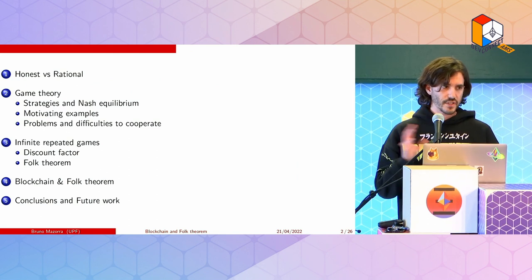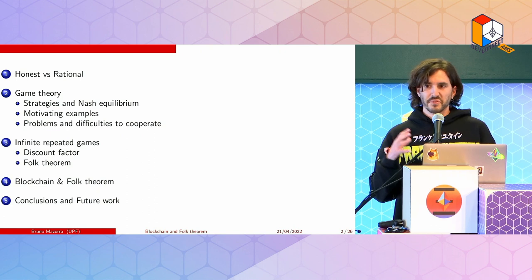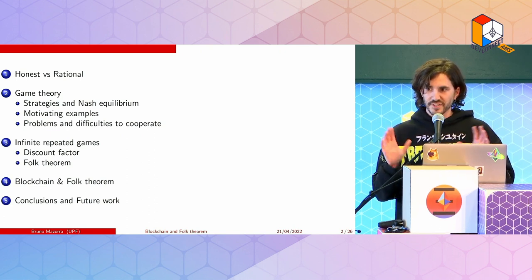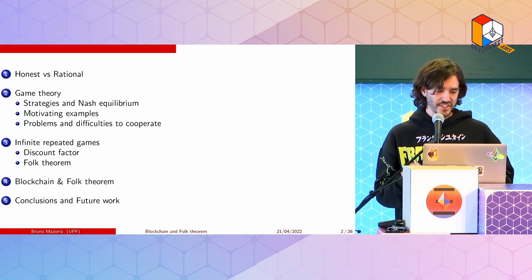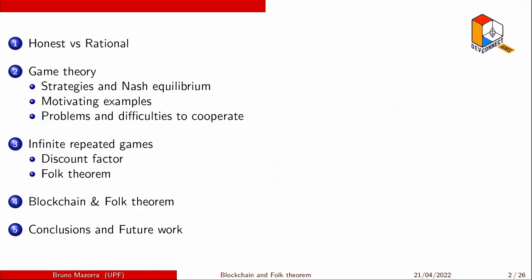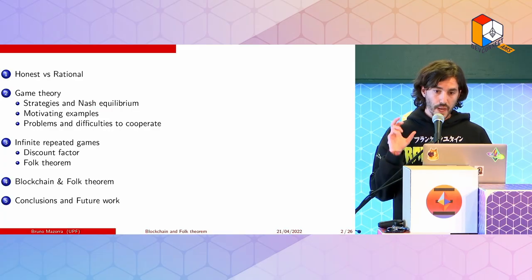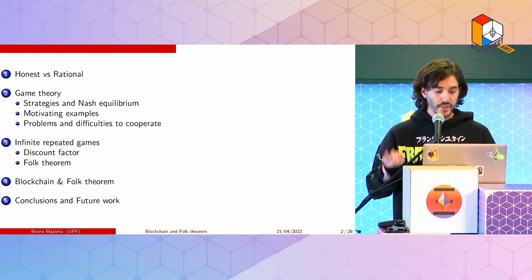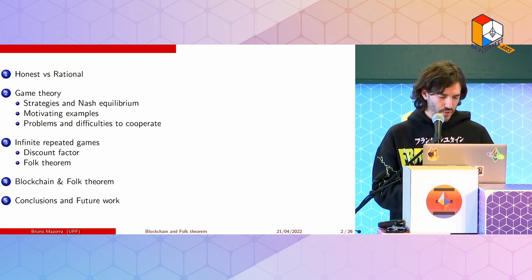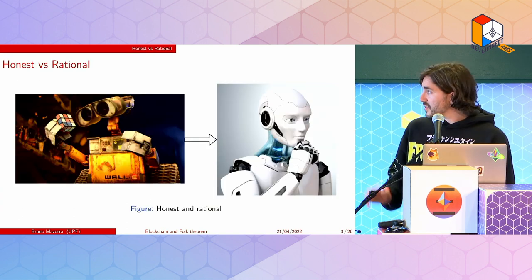First I'll start with a review of honest versus rational models. Afterwards I'll introduce the most basic game and define mathematical concepts like strategies and Nash equilibria, explain motivating examples in blockchain technology, and discuss difficulties players have in stage games to cooperate. Then we'll move to infinite repeated games, see what happens with the discount factor, and explain what folk theorem means. We'll apply this model to the games we saw before, and finally explain some conclusions and future work.